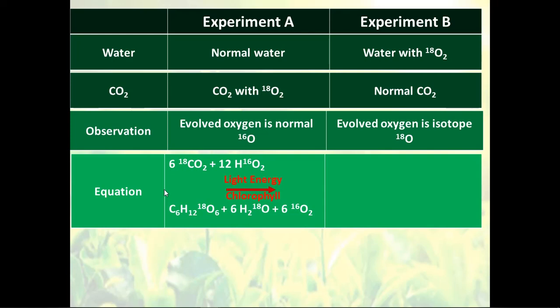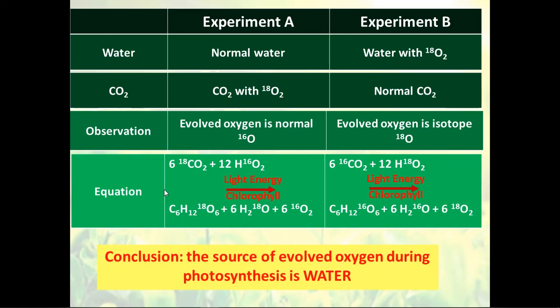In the first experiment, carbon dioxide had the isotope and water had normal oxygen — the carbohydrates contained the isotope oxygen, and the evolving oxygen was normal. In the second experiment, the water had the isotope oxygen — the evolving oxygen was isotope, and the oxygen present in the carbohydrates and in the produced water was normal. This confirmed Van Niel's theory that the evolved oxygen comes from the water.